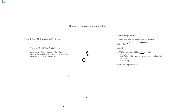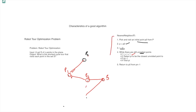At i=0 there are all unvisited points, so i becomes 1 and the closest unvisited point becomes P1. We mark P1 as visited. Then we increment i again, find the next closest unvisited point as P2, visit it, find P3 as closest, and so on. In this way we look for the shortest path.